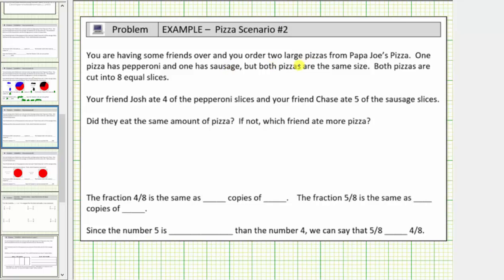You are having some friends over and you ordered two large pizzas from Papa Joe's Pizza. One pizza has pepperoni and one has sausage, but both pizzas are the same size. Both pizzas are cut into eight equal slices.